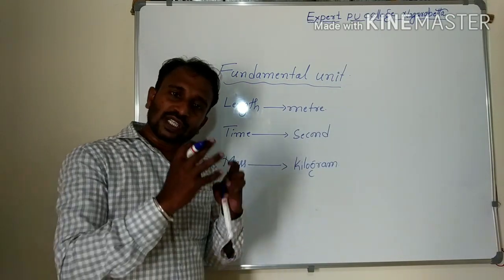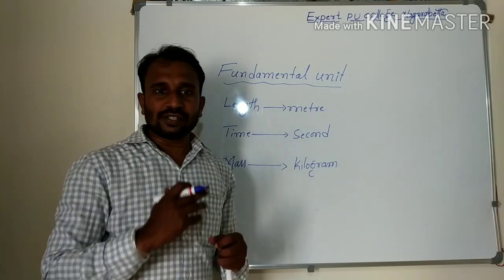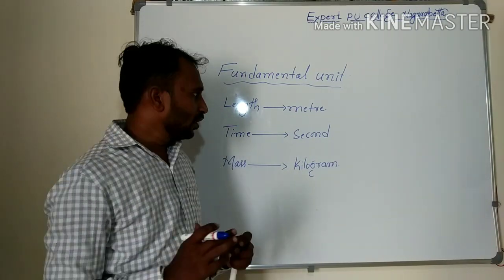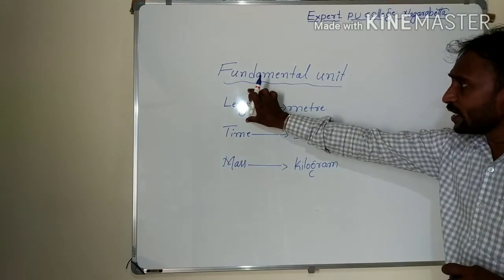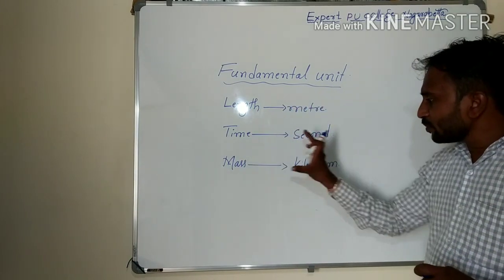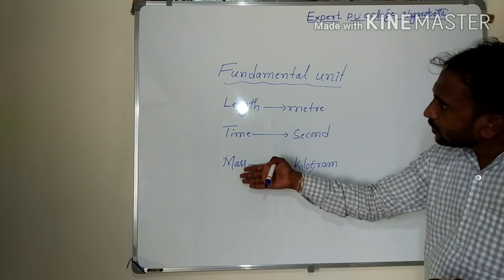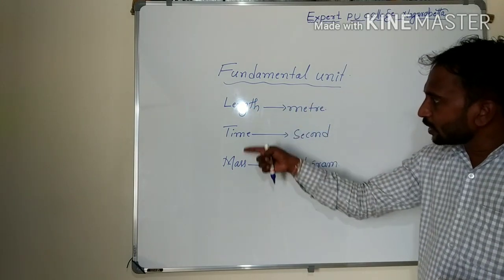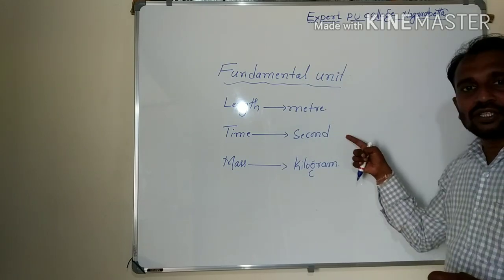Fundamental physical quantities have corresponding fundamental units. By using these fundamental units, we can derive the derived quantities. Length is always measured in meter, time measured in second, and mass measured in kilogram — these are the fundamental units.